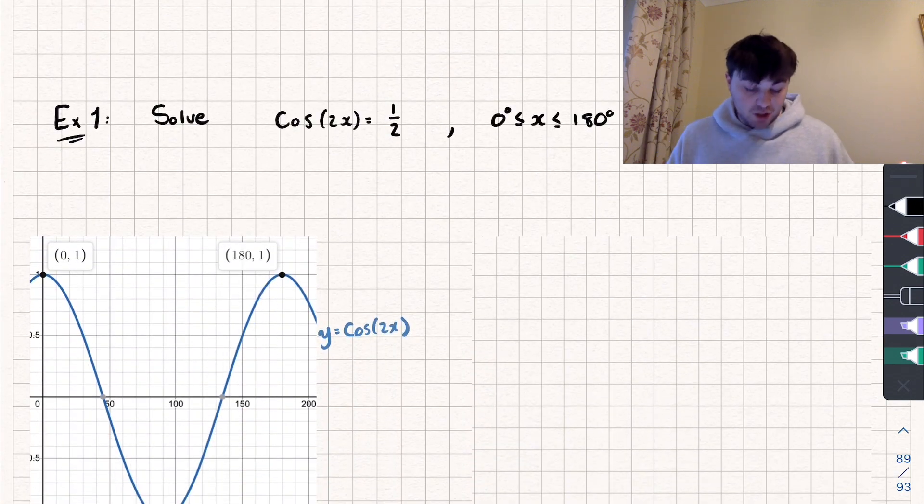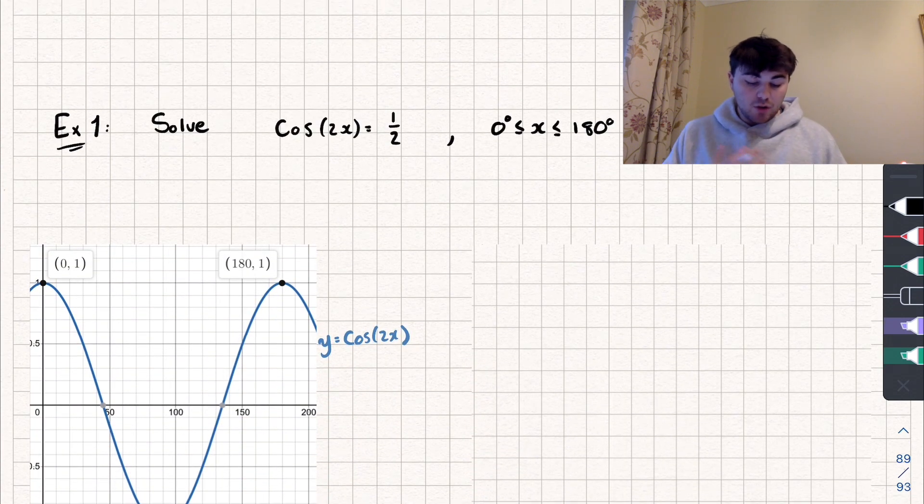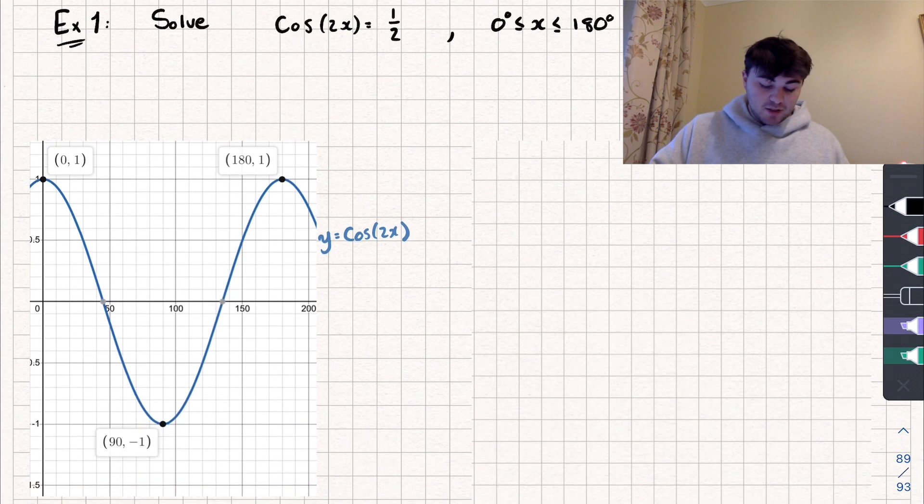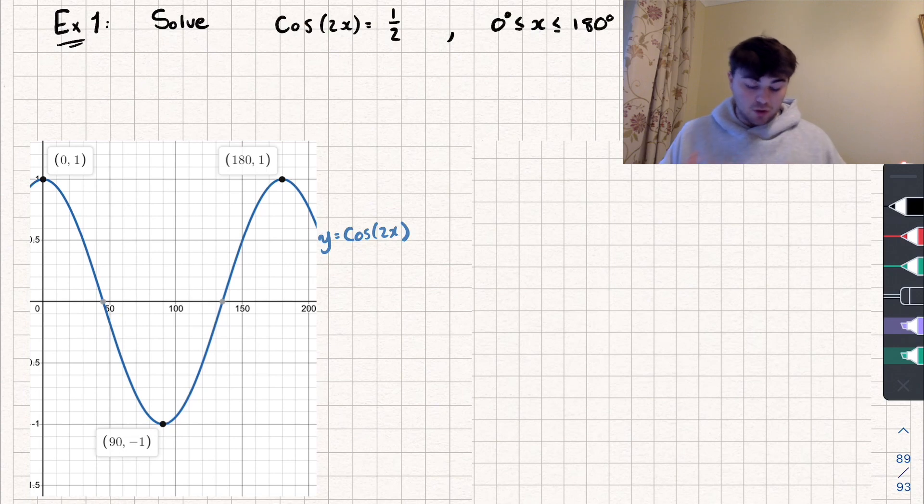So let's take a look at this first question here. So we need to solve cosine of 2x equals a half in the range of values from 0 to 180 degrees. And you can see I've drawn a sketch of this graph, y equals cos of 2x, between this range. And as I said above, it's been squashed, so it's twice as small. So what we could do to help us solve this is we could undo that. We could stretch it out, so it's the normal size, so we could look at cos of x.